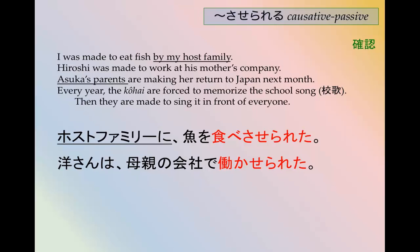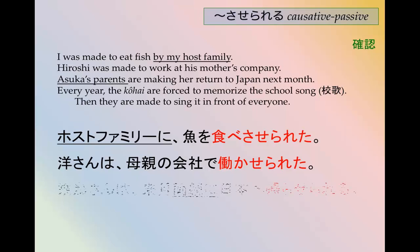'Asuka's parents are making her return to Japan next month.' We could say this as an active statement, but it's more likely — because she doesn't want to leave — that it would be a causative passive statement. So: Asuka-san wa, raigetsu, ryōshin ni nihon e kaeraserareru. 'Kaerasareru' also works here. Meaning 'to be made to go home.'